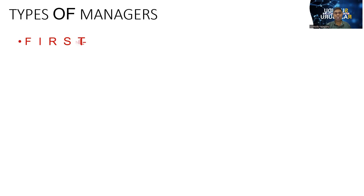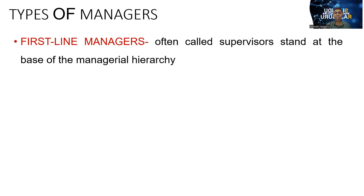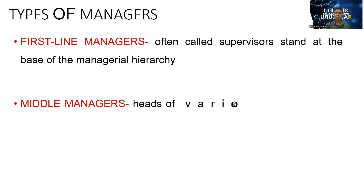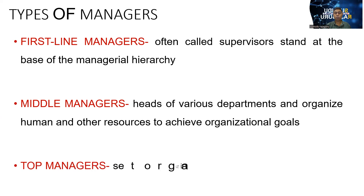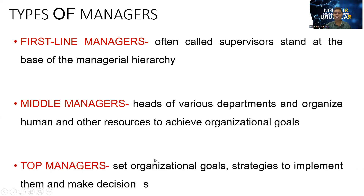There are also types of managers. First line managers — often called supervisors — stand at the base of the management hierarchy and are directly involved in operational functions. Then middle managers: heads of various departments who organize human and other resources to achieve the organization's goals. Then the last one is top managers: they set organizational goals, create strategies to implement them, and make decisions.